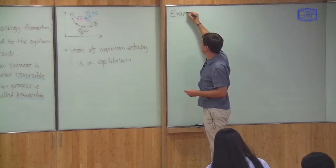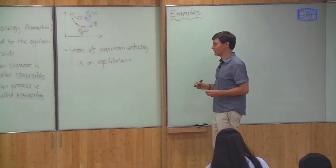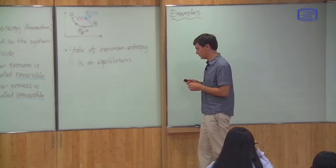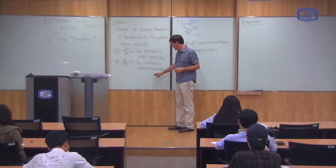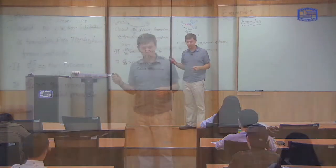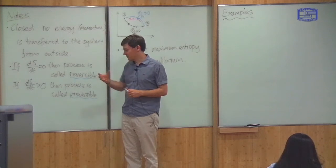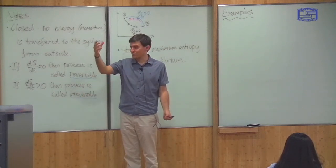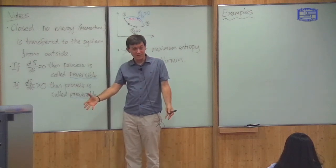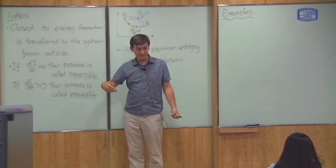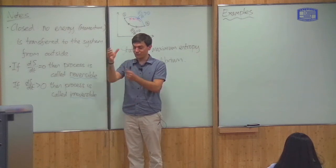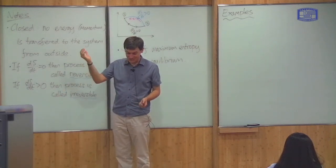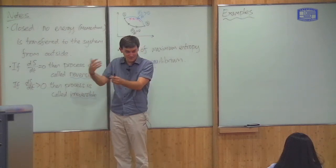Before I do that, let me say that the fact that certain processes are irreversible because of the entropy requirement is very important for the world as we see it. A classical example: if I take a glass filled with water and drop it so the glass smashes, that results in an increase in entropy. It's impossible for the little bits of glass to reassemble and form a perfect glass in my hand. The fact that entropy is always increasing is why you see glasses smash but never see them come back together. It's driven by the second law of thermodynamics.